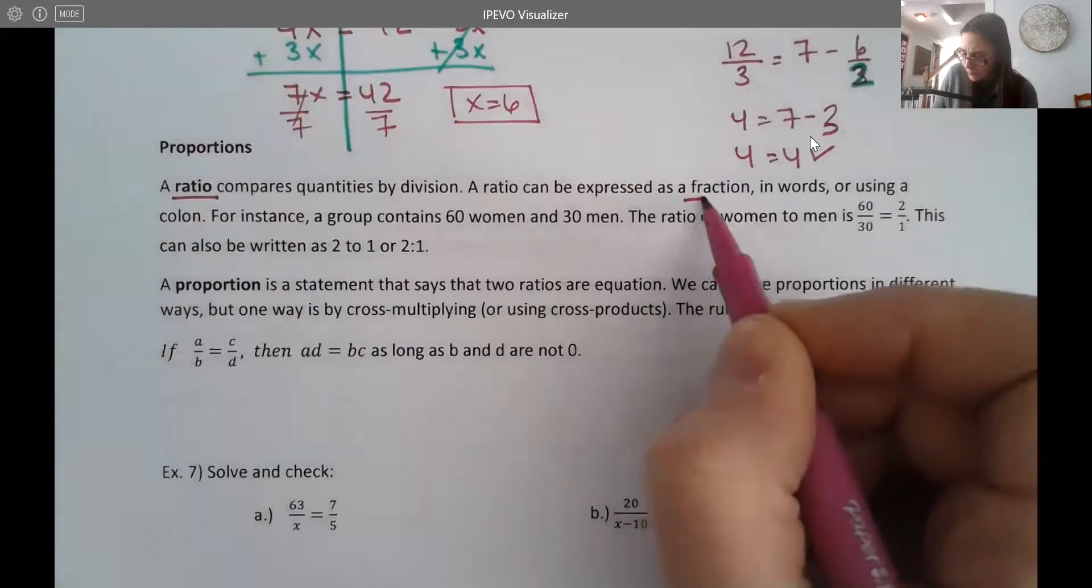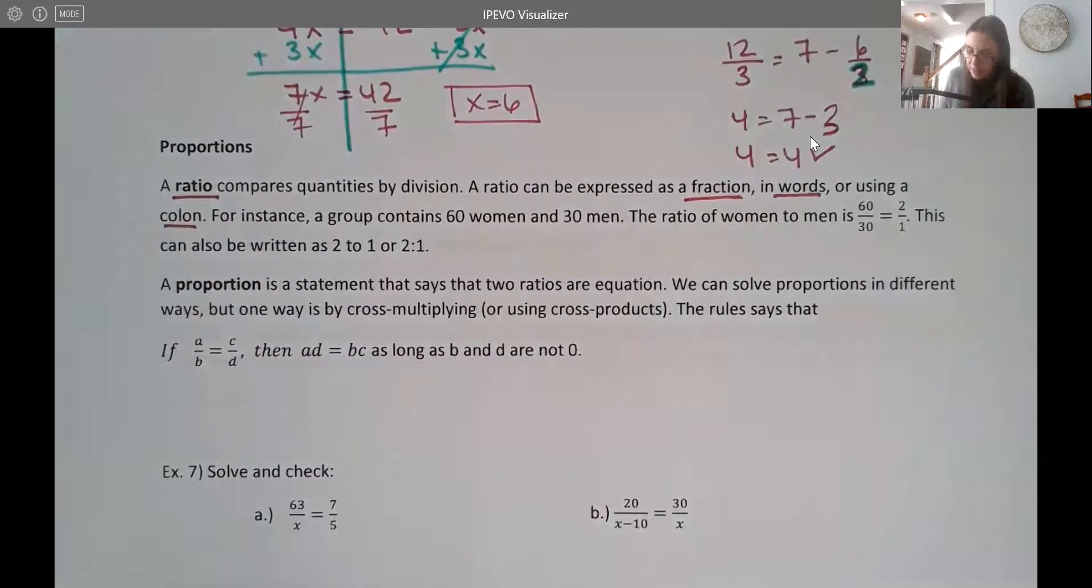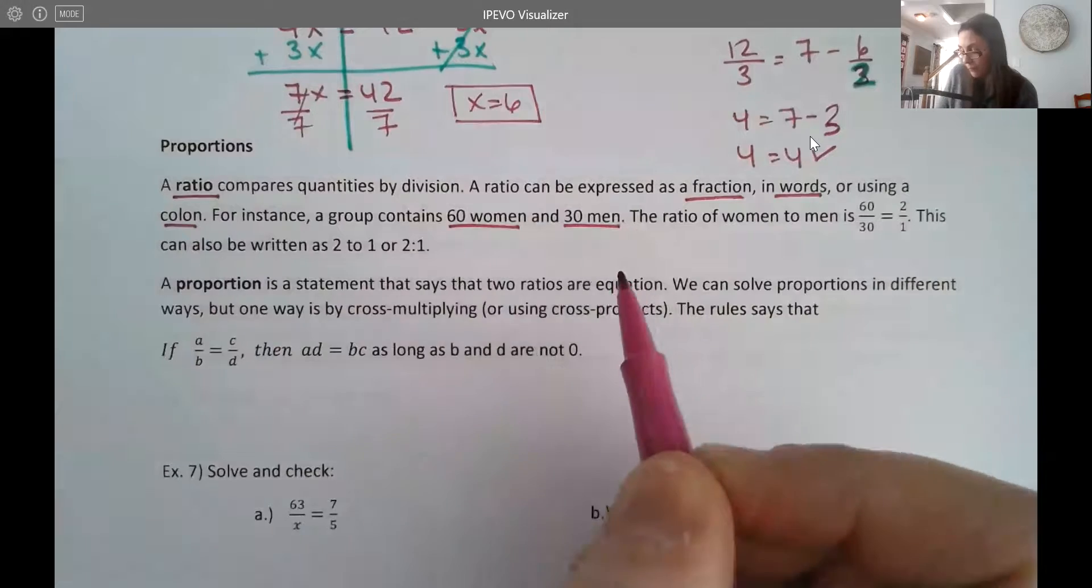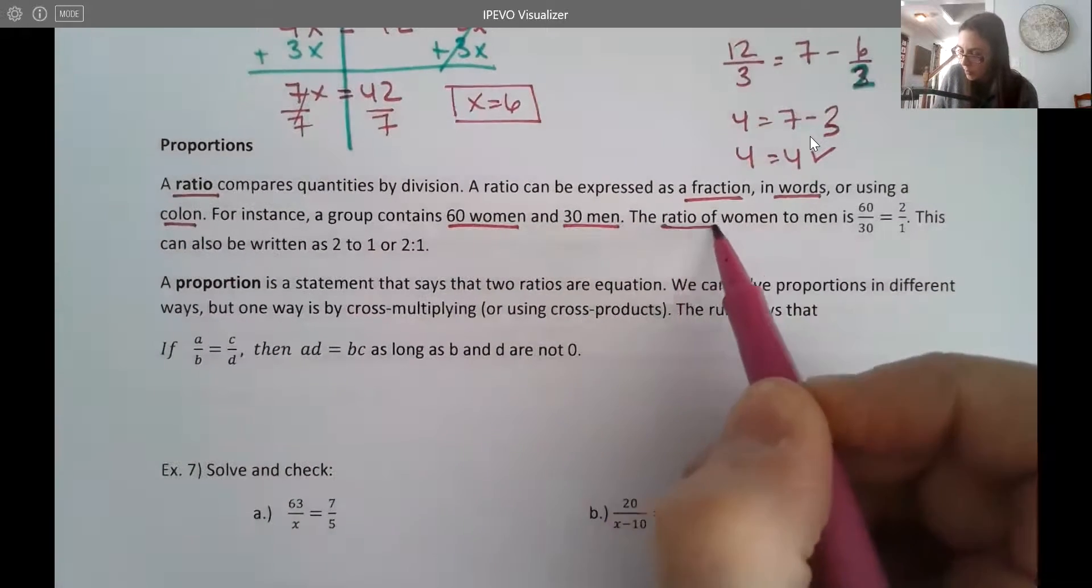So a ratio compares quantities by division. We can express it as a fraction, in words, or using a colon. For instance, let's say we have a group that contains 60 women and 30 men.